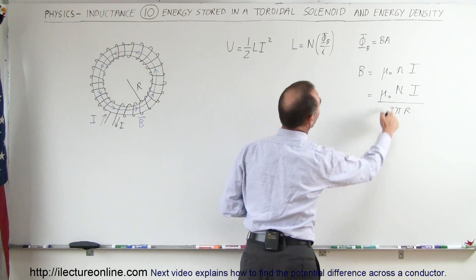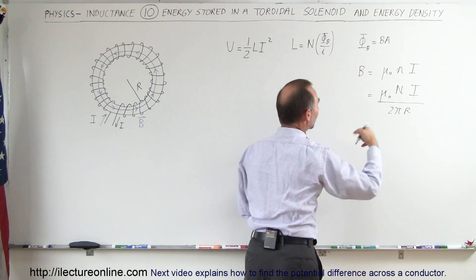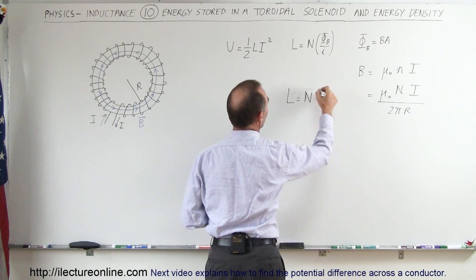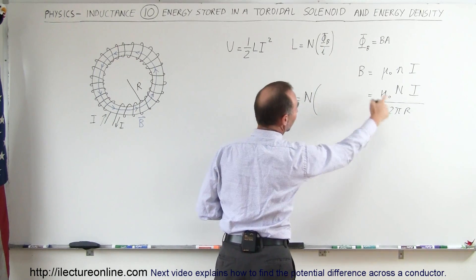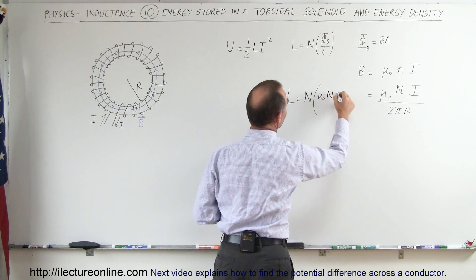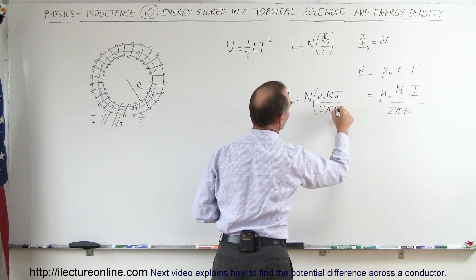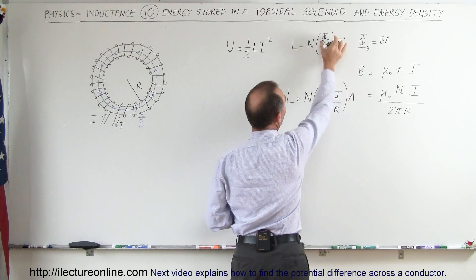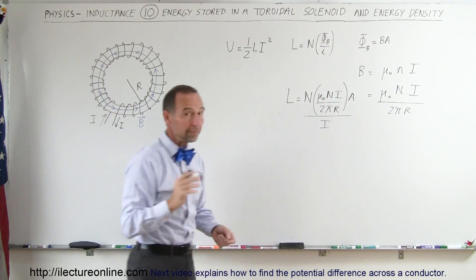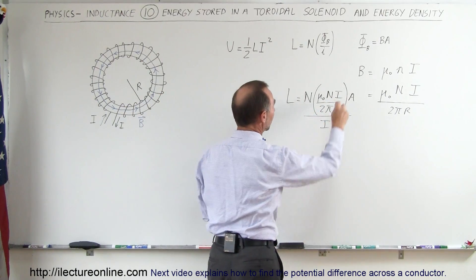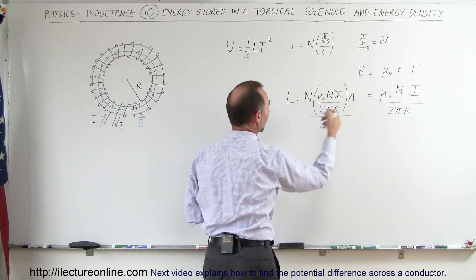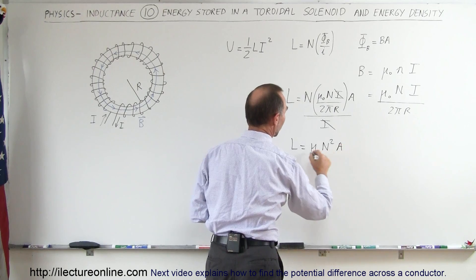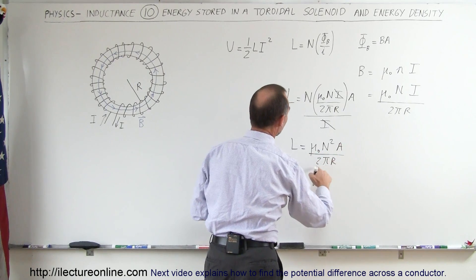If we plug that in, we can say that the self-inductance of a toroidal solenoid equals the number of loops times the flux — which is the magnetic field, mu-naught times N times I, divided by 2πr — times the cross-sectional area, all divided by the current I. The I's cancel and the N's multiply, giving us L equals mu-naught times N² times the cross-sectional area divided by 2πr.